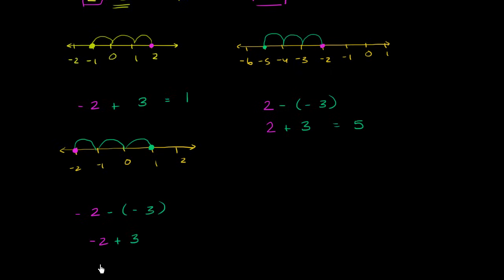And negative 2 plus 3, we've already seen it right over here. You start at negative 2, you start 2 to the left of 0, and then we're going to go 3 to the right. We're adding 3: 1, 2, 3.